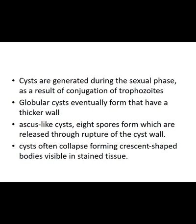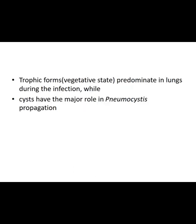Cysts often collapse, forming crescent-shaped bodies visible in stained tissue. The trophic form — i.e., the vegetative, asexual form — predominates in the lung during infection, while cysts have the major role in propagation of the organism. The infective form is the vegetative trophic form, and the reproductive form is the cyst.